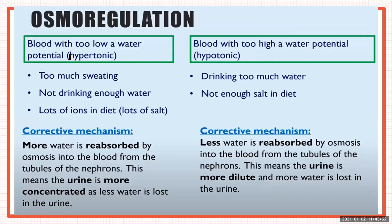What causes the blood to become hypertonic? Too much sweating, a lot of water leaving the body, not drinking enough water, and consuming lots of salt. The corrective mechanism is that more water is reabsorbed by osmosis into the blood from the tubules of the nephrons, because solutes currently exceed water. This means the urine will be more concentrated, as less water is lost — conserving water when blood is hypertonic.